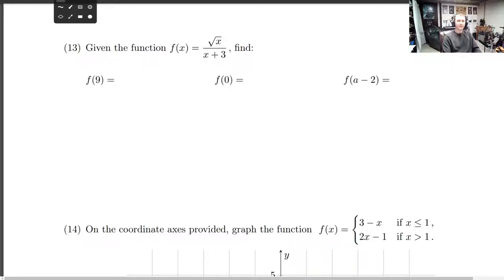Number 13. Things are starting to get real. Given this function, which is a little crazy, square root of x divided by x plus 3, we're going to find f of 9, f of 0, and f of a minus 2.